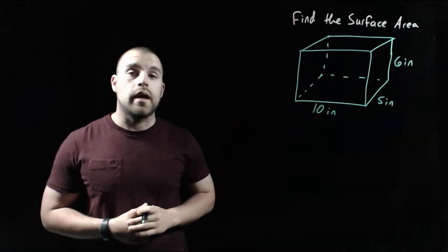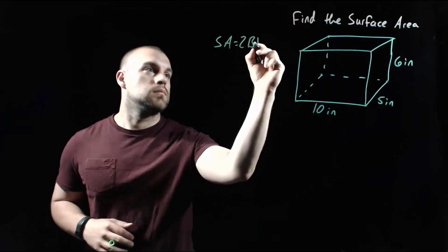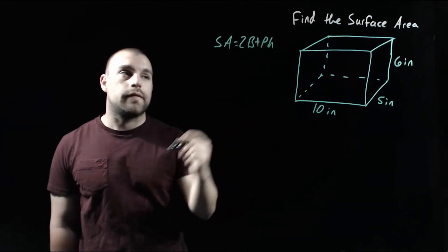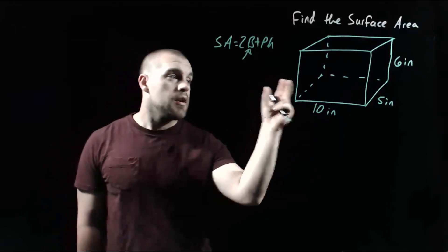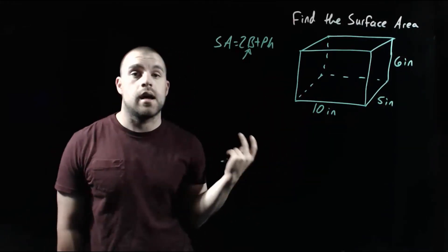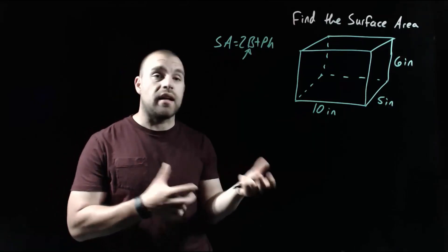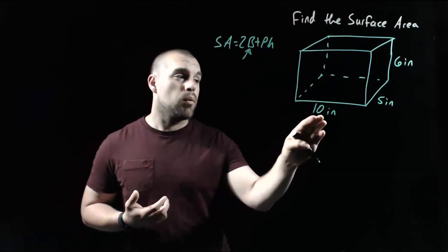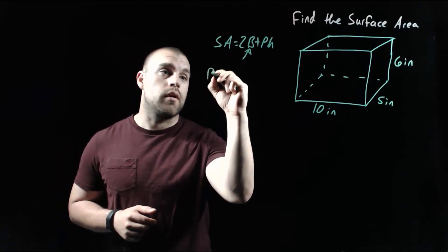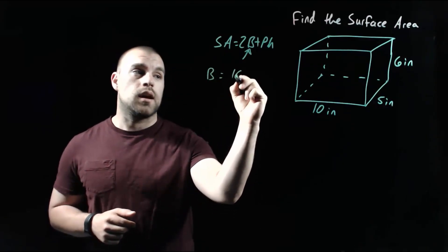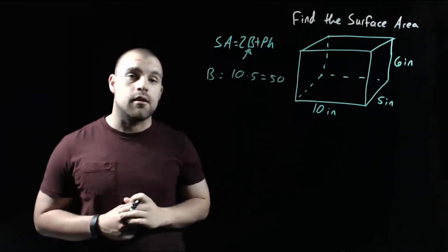Looking at this prism, remember our surface area formula says we first have to find the area of the base. Looking at this picture, the base shape is a rectangle. In order to find the area of a rectangle, we take length times width — we're looking at the 10 inches and the 5 inches. If we multiply those together, taking 10 times 5, we end up getting 50 as the area of that base.